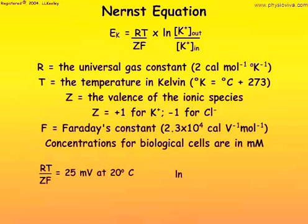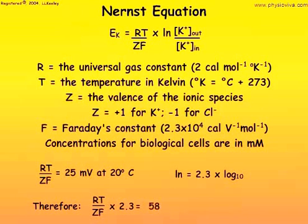Likewise, the natural log can be simplified to 2.3 times the log to the base 10. Therefore, RT divided by ZF times 2.3 simplifies to 58 millivolts at 20 degrees centigrade. If the ion is chloride, then the value is minus 58 millivolts.